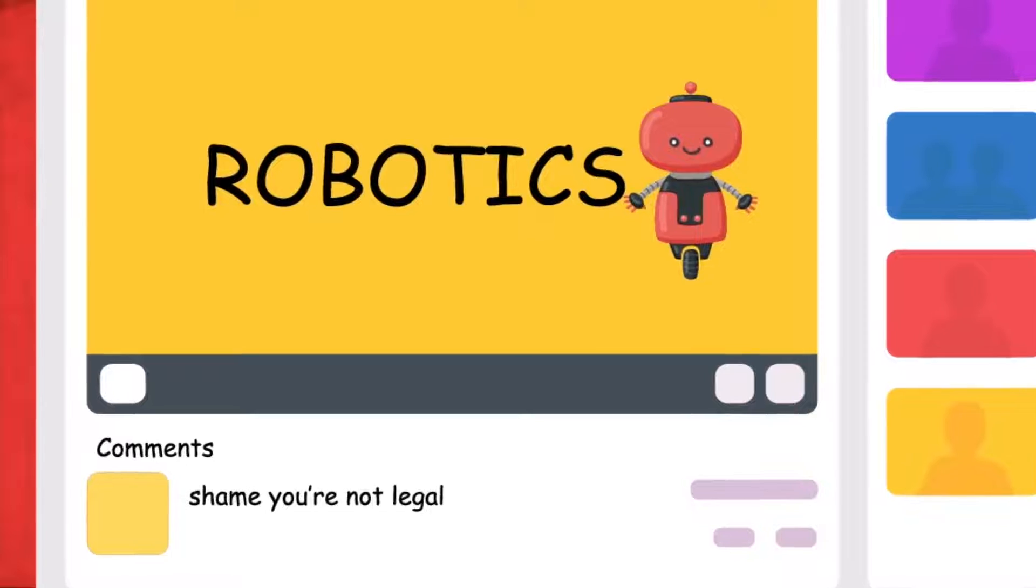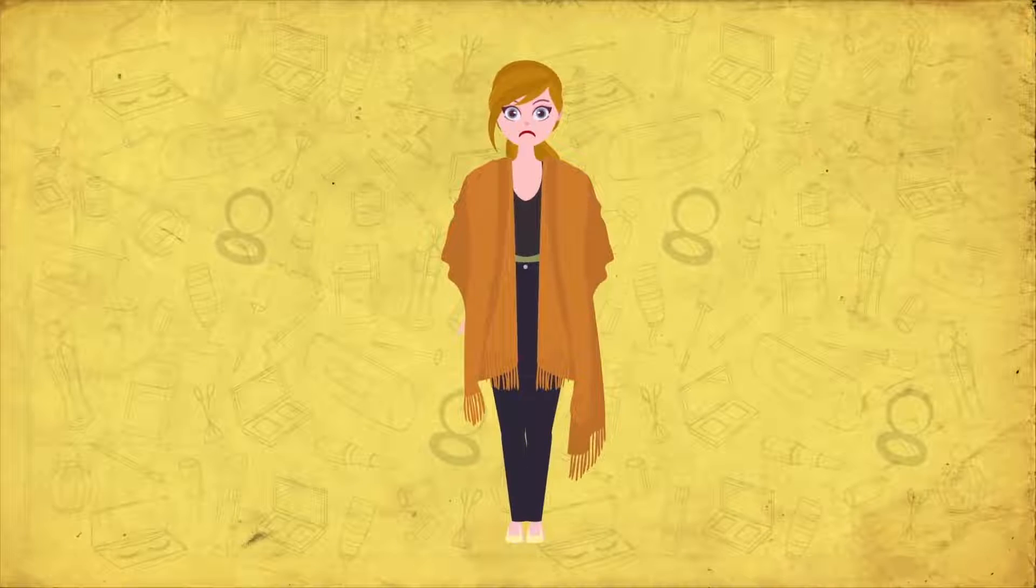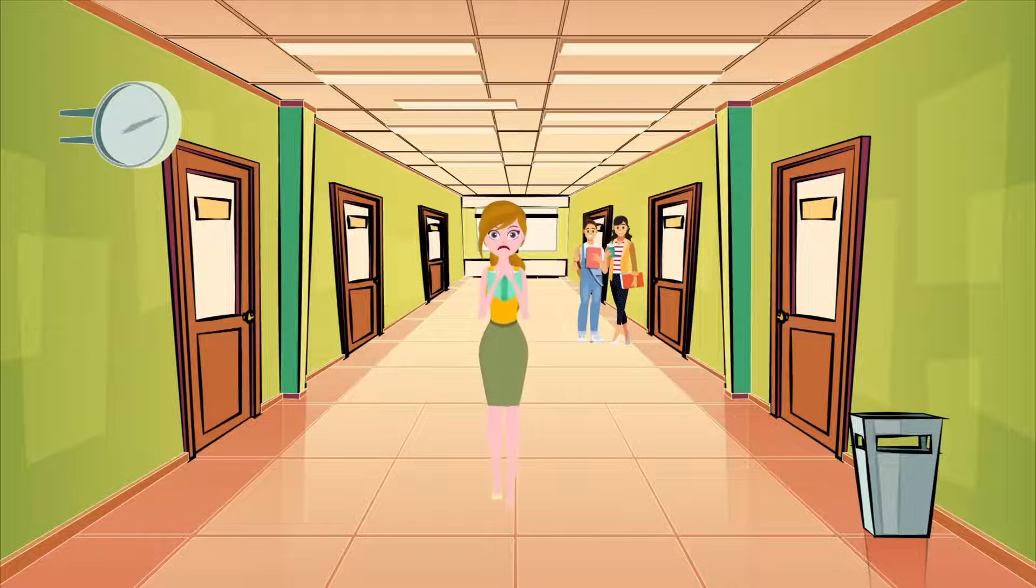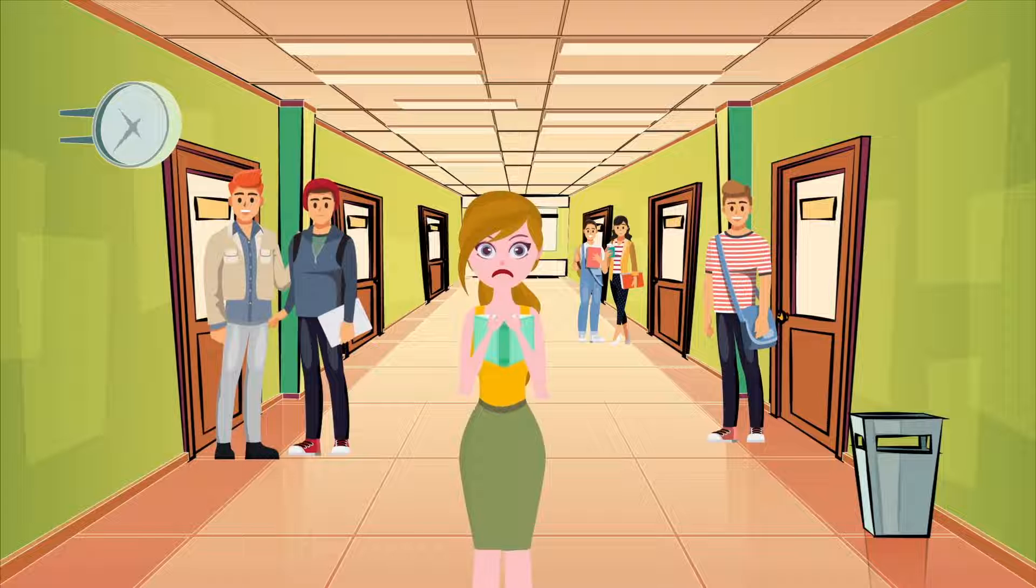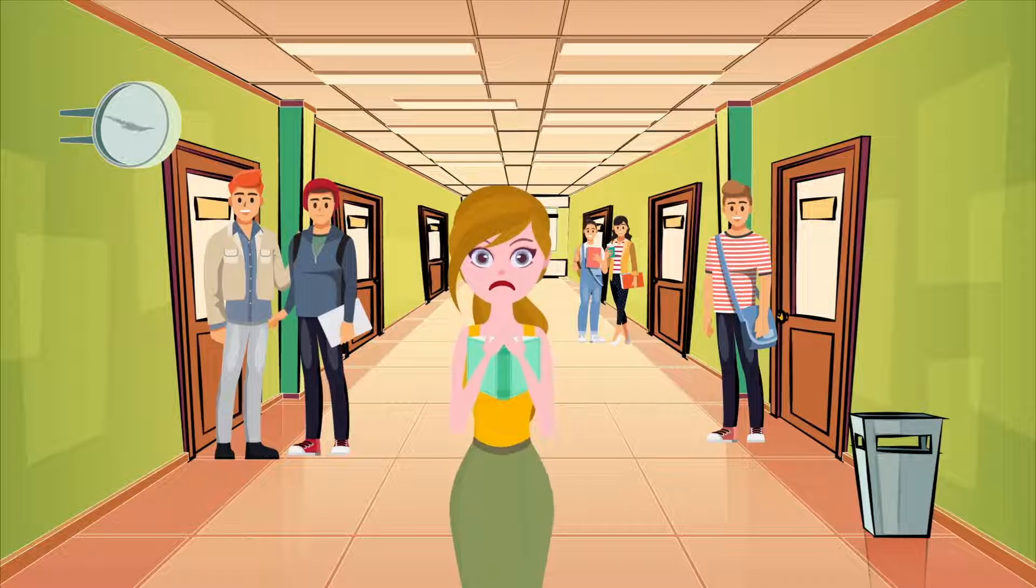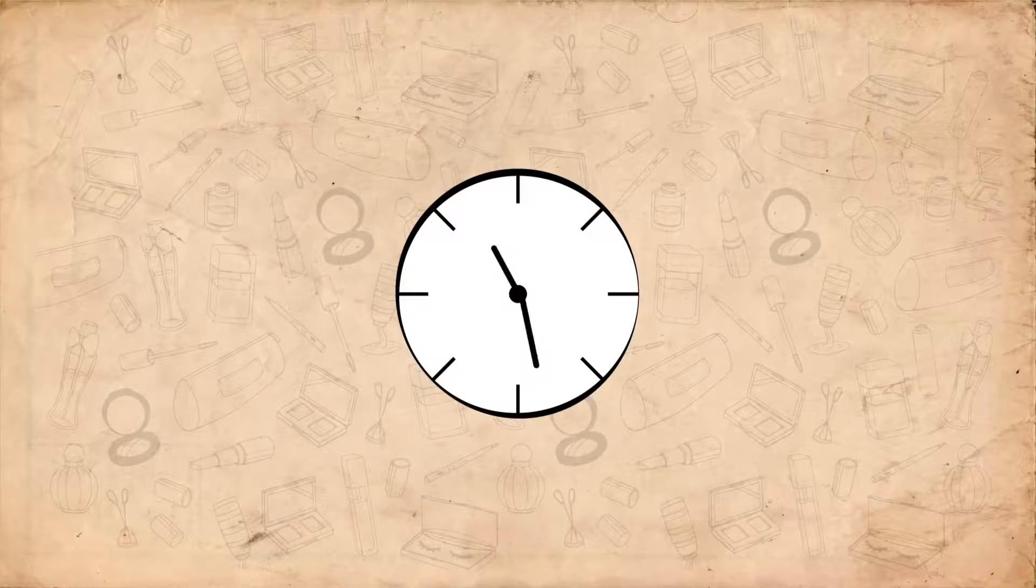I started wearing baggy clothes to hide the curves I was developing. I kept my textbooks over my chest in the hallways at school. I started getting so anxious about when the next unwanted comment would come, that I would spend breaks between classes in the restroom throwing up. I started showing up late for class so I didn't have to walk through the halls when there was a crowd.